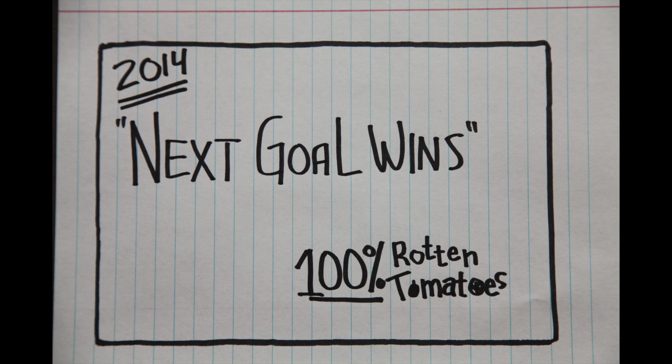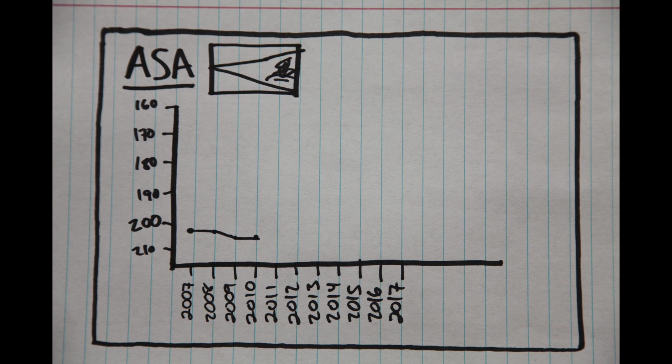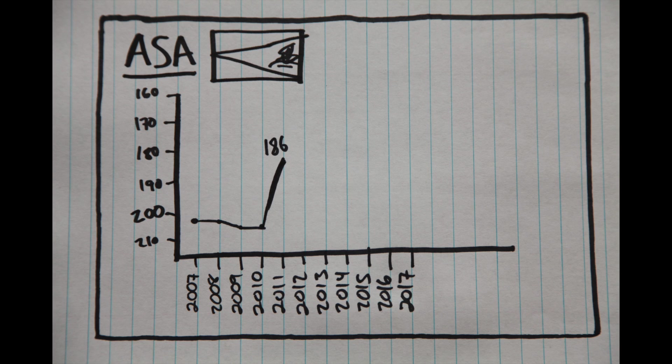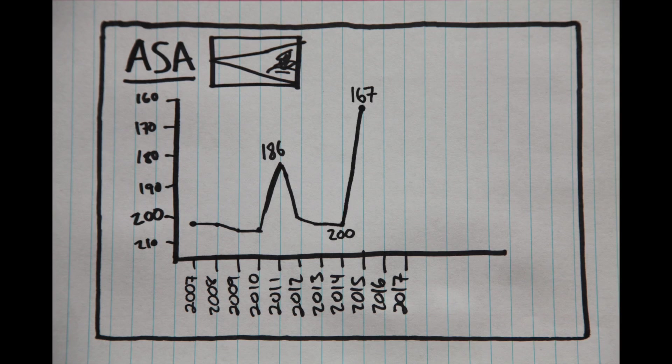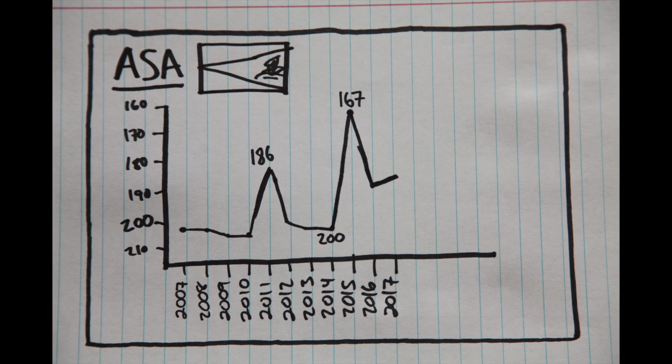After their unprecedented run in 2011, American Samoa shot up in the FIFA rankings from number 203 all the way to 186. And after a similar run trying to qualify for the 2018 World Cup in Russia, in 2015 they shot to their highest ever rank of 167, but have since slipped back to their current position at number 189.